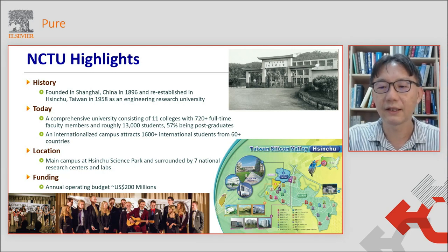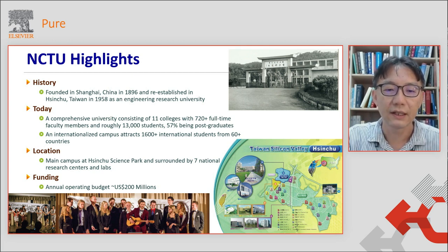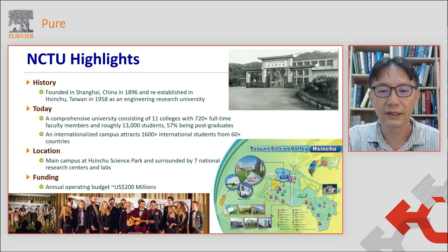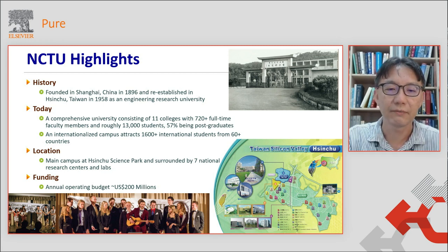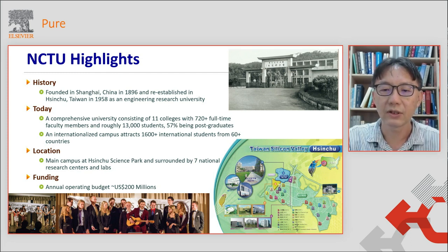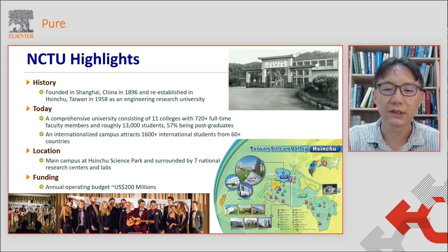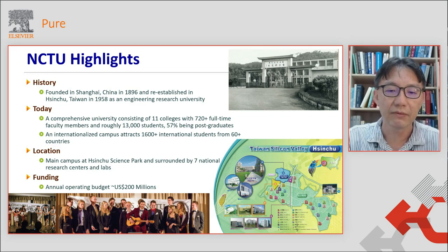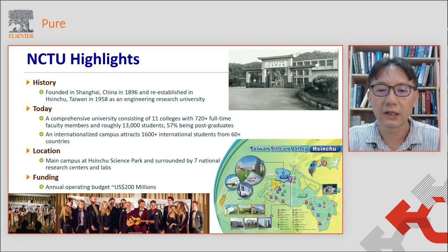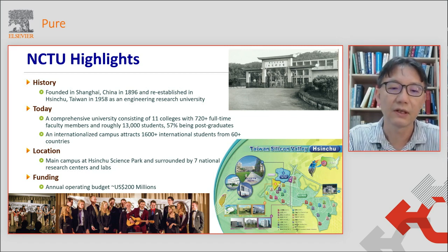Before I start my talk, I'd like to introduce our university. Our university was founded in China in 1896 and re-established in Shenzhou, Taiwan in 1958. Now we have 12 colleges and more than 740 full-time faculty members. We have 13,000 students and half of the students are graduate students. We have set up an international campus attracting more than 1,600 international students from more than 60 different countries.